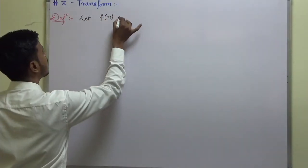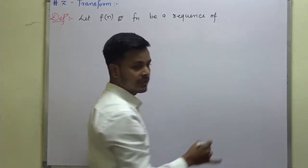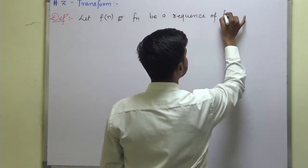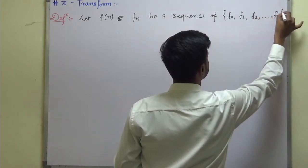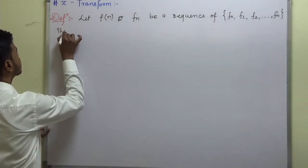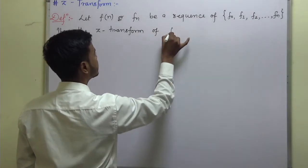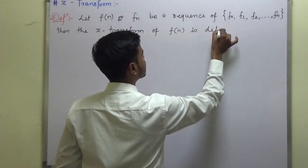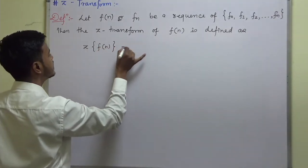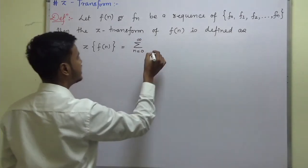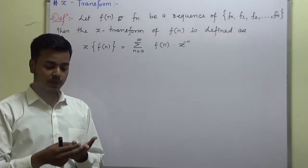Let f(n) be a sequence of functions f(0), f(1), f(2), ..., f(n). Then the Z-transform of f(n) is defined as: Z{f(n)} = summation from n=0 to infinity of f(n) · z^(−n).